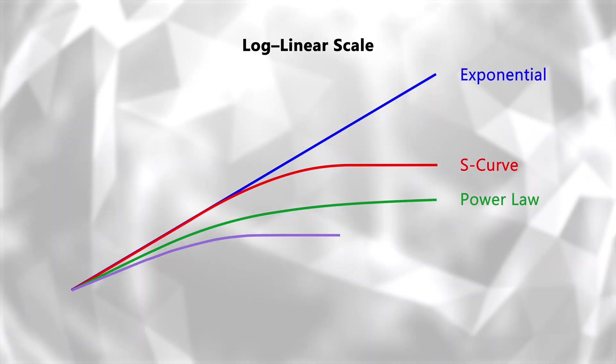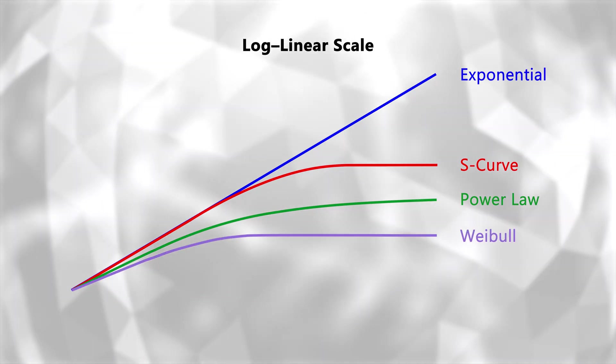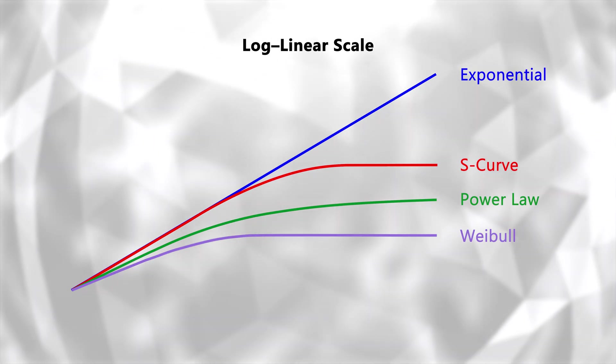Alternatively, if theta is greater than 1, we see what's called a tapered power law, or Weibull model. Growth still slows down, but it does so even more than in a regular power law, and has a saturation point, unlike a power law, which can keep growing.